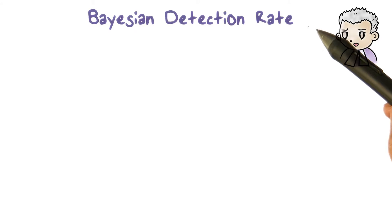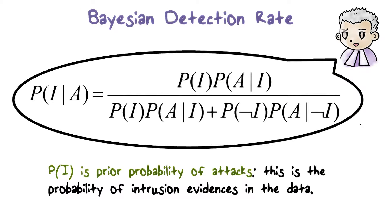Let's discuss more about the Bayesian detection rate. We can use the Bayes theorem to expand this, and we got this formula. Here, PI is the prior probability of attacks, meaning this is the probability of intrusion evidence in the data.